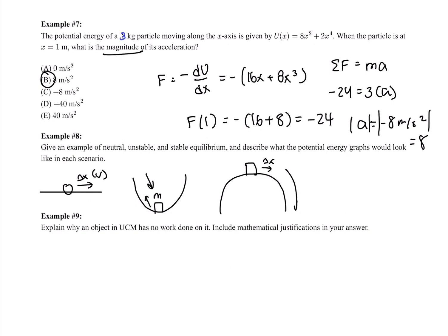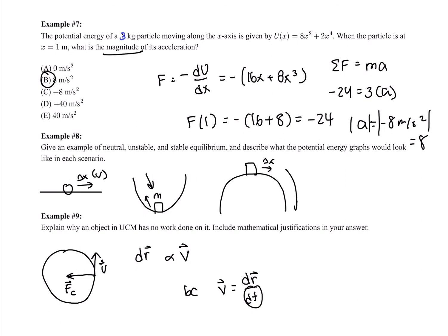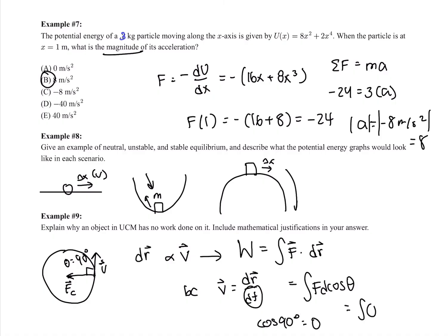Example 9: explain why an object in uniform circular motion has no work done on it. In uniform circular motion, the centripetal force points inward toward the center. The tangential velocity is tangent to the circle, and dr is proportional to the tangential velocity since v equals dr/dt. So dr is perpendicular to the centripetal force — theta equals 90 degrees. Since work equals the integral of F dot dr equals Fd cosine(90°) equals zero, no work is done.